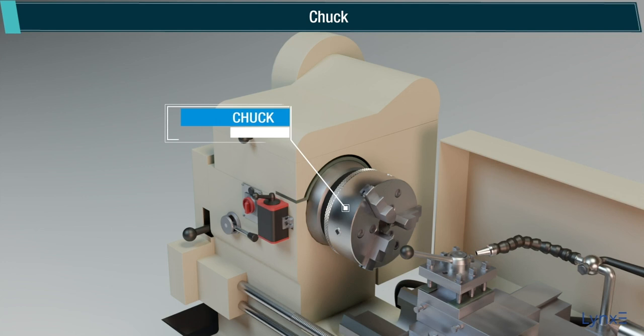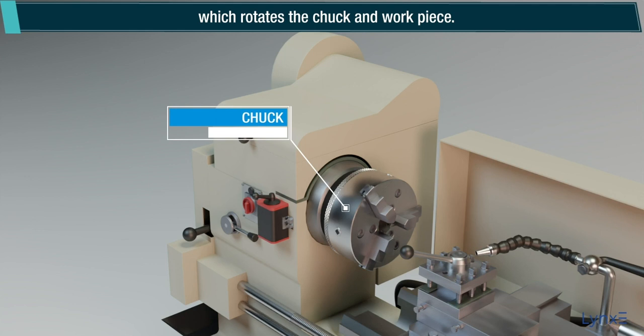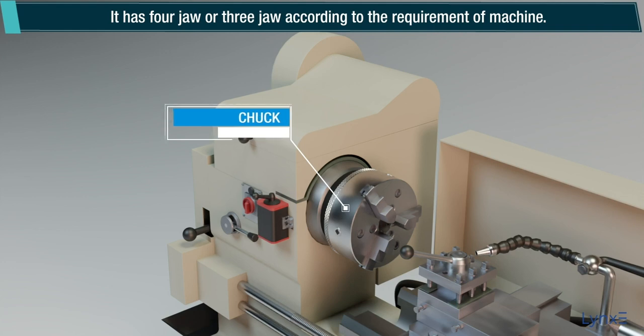Chuck: The chuck is used to hold the workpiece. It is bolted on the spindle, which rotates the chuck and workpiece. It has four jaws or three jaws according to the requirement of the machine.